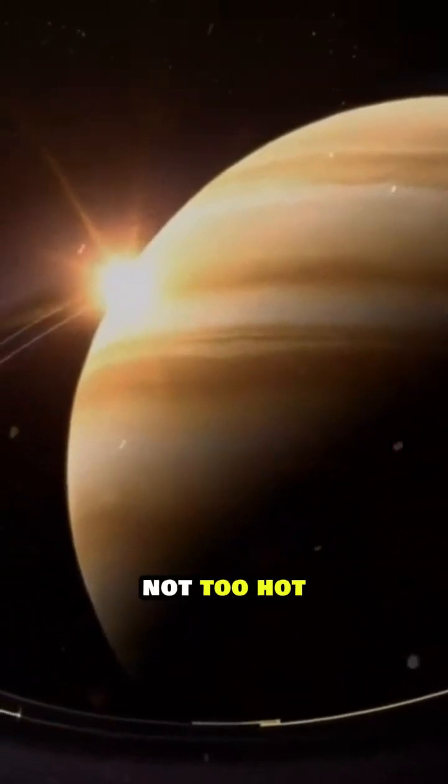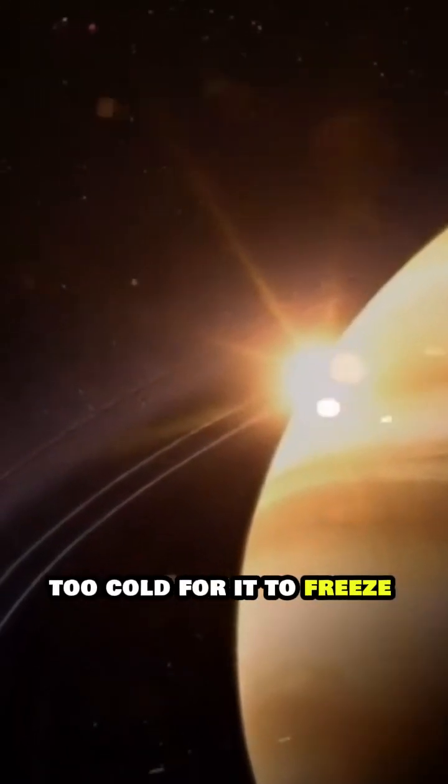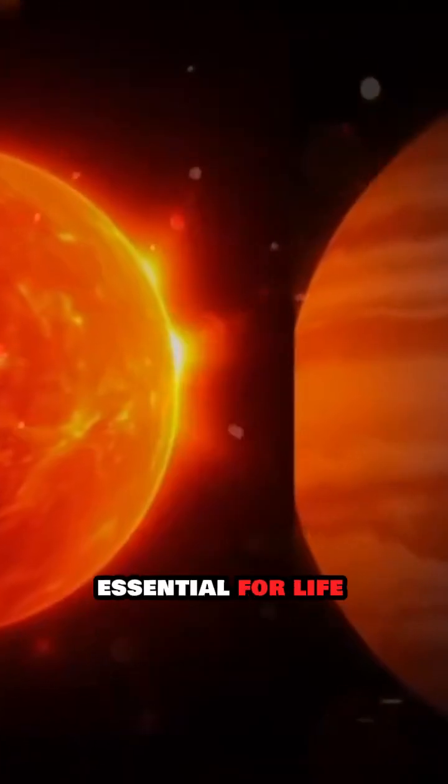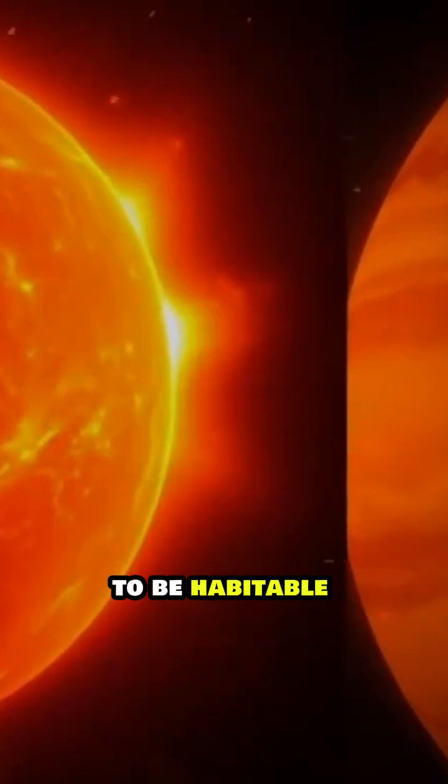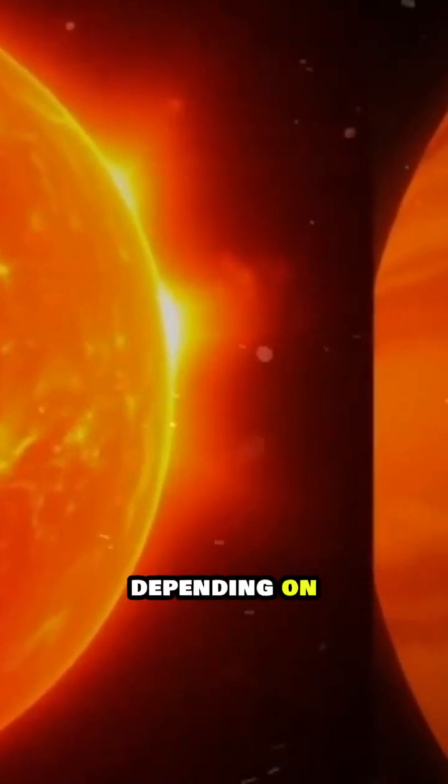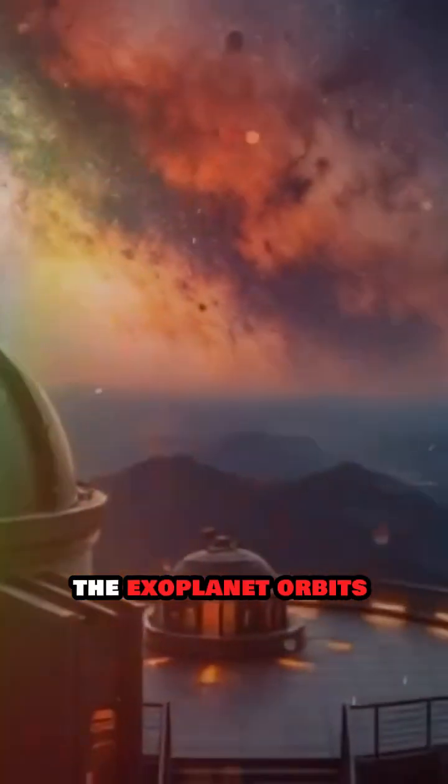Not too hot for water to evaporate, nor too cold for it to freeze. Liquid water, essential for life, is considered one of the key ingredients for a planet to be habitable. This zone varies depending on the type of star the exoplanet orbits.